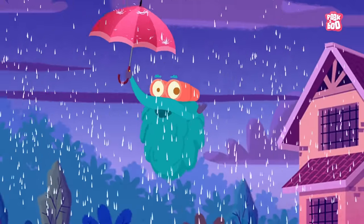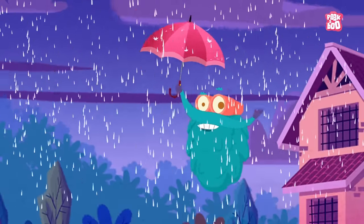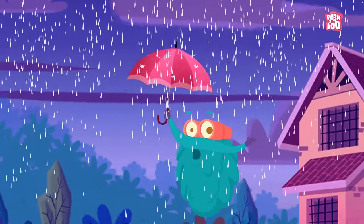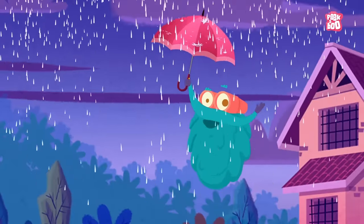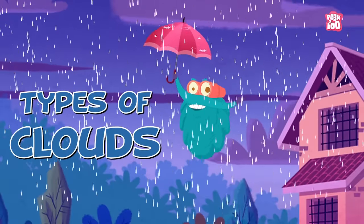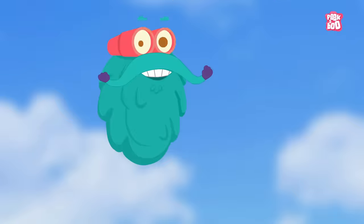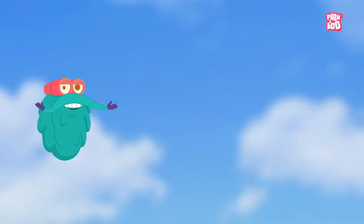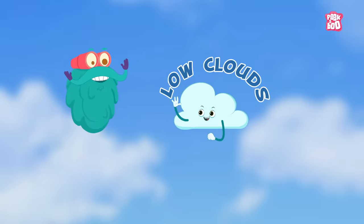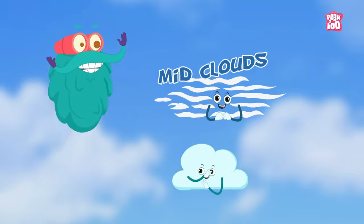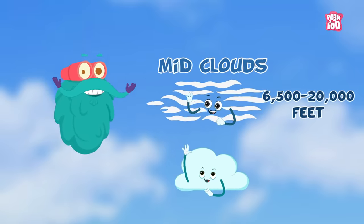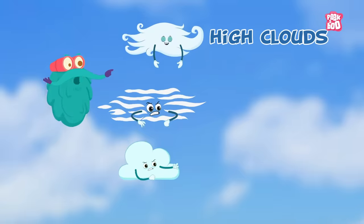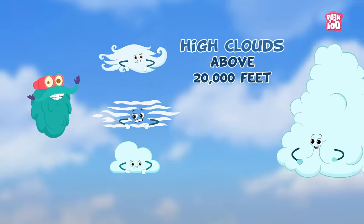Did you get that word? Nimbostratus. Well, it is a type of cloud, and today I'll tell you all about different types of clouds. Clouds can be divided into three major groups: low clouds, that is below six thousand five hundred feet; mid clouds, six thousand five hundred to twenty thousand feet; and high clouds, above twenty thousand feet.